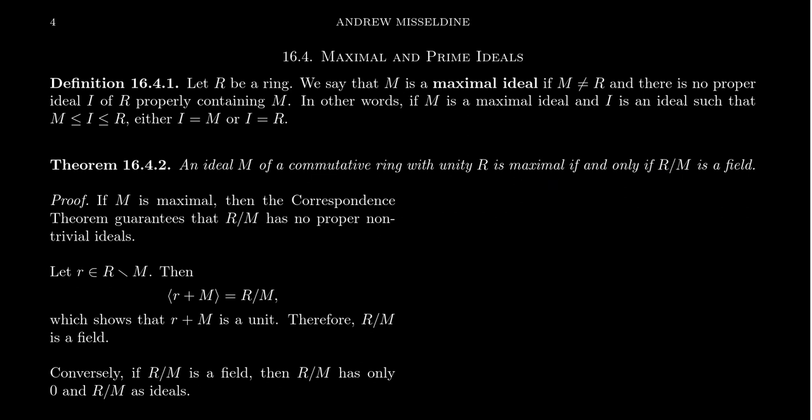This is essentially a consequence of the correspondence theorem. If M is a maximal ideal, then by the correspondence theorem, R mod M has no proper ideals. Because since M is maximal, there's no ideals between M and R. By the correspondence theorem, every ideal of R mod M can be lifted to an ideal that contains M. Well, by maximality, any ideal that contains M is either M itself or R.